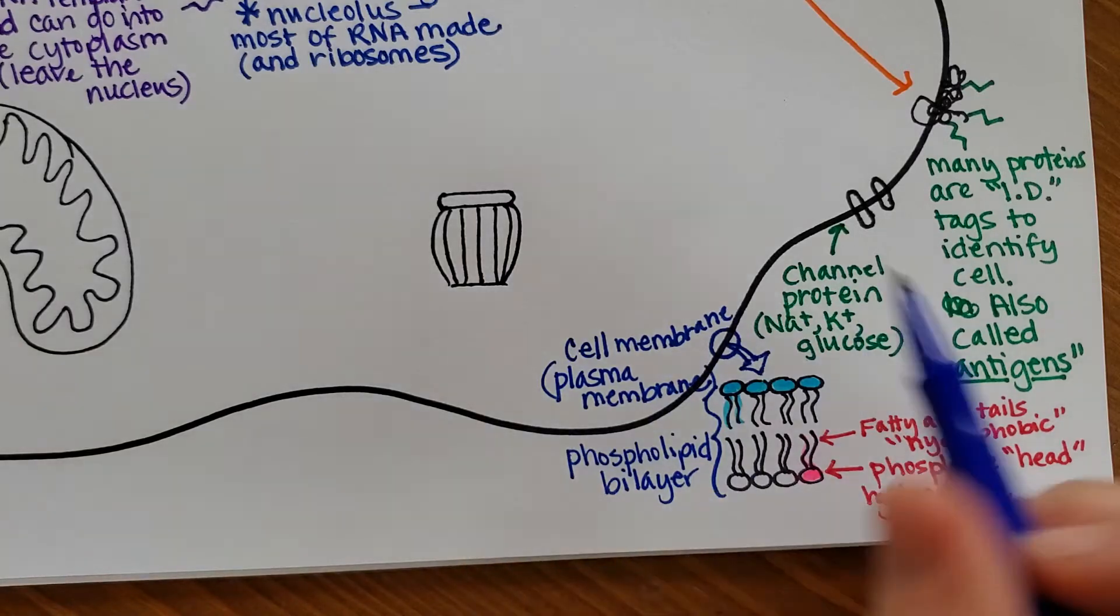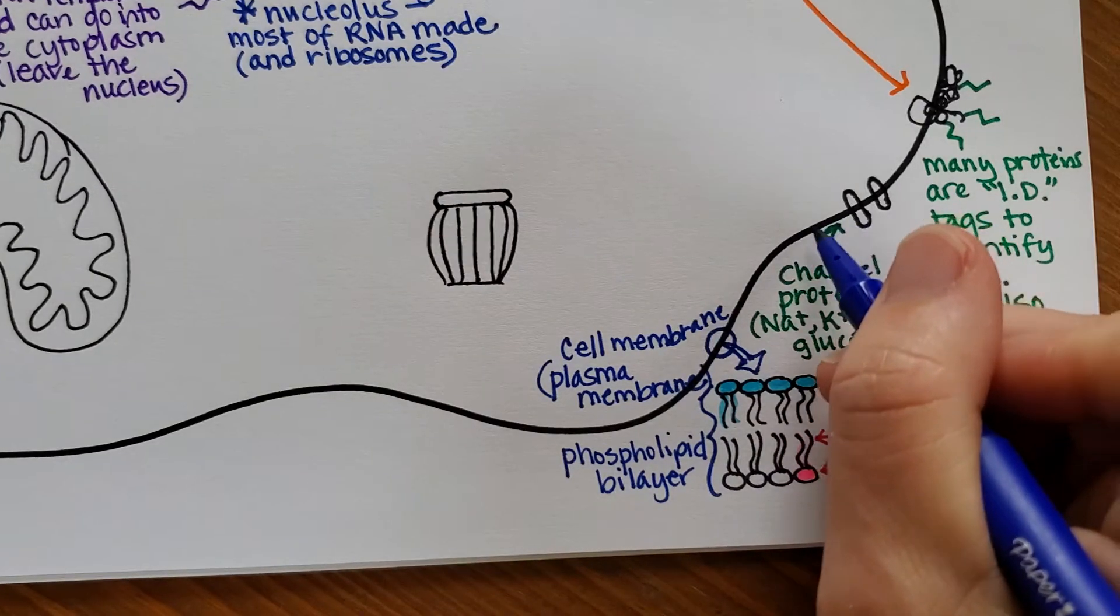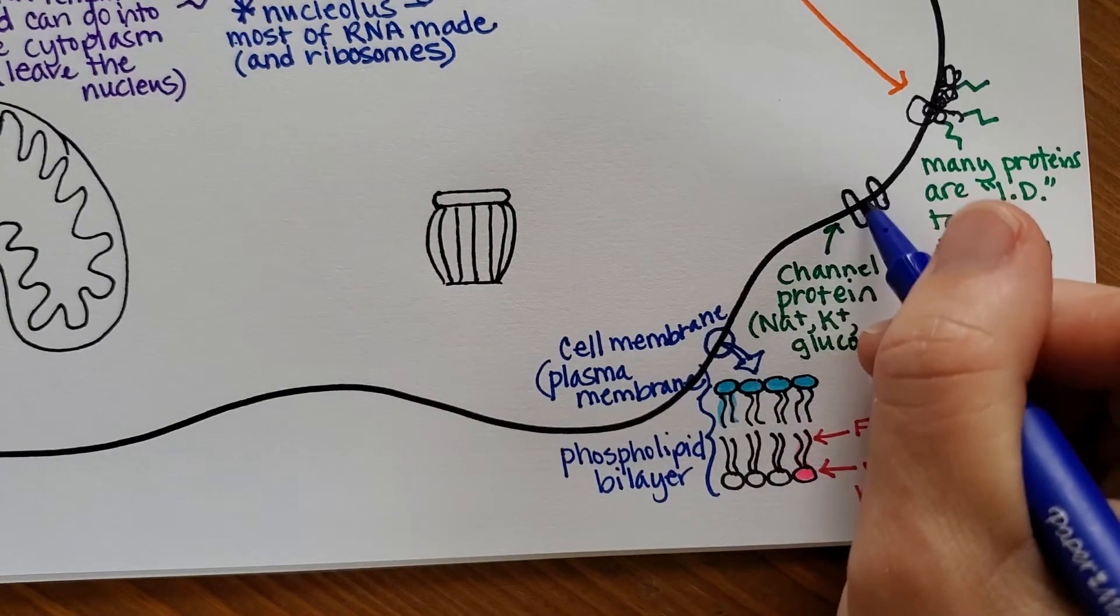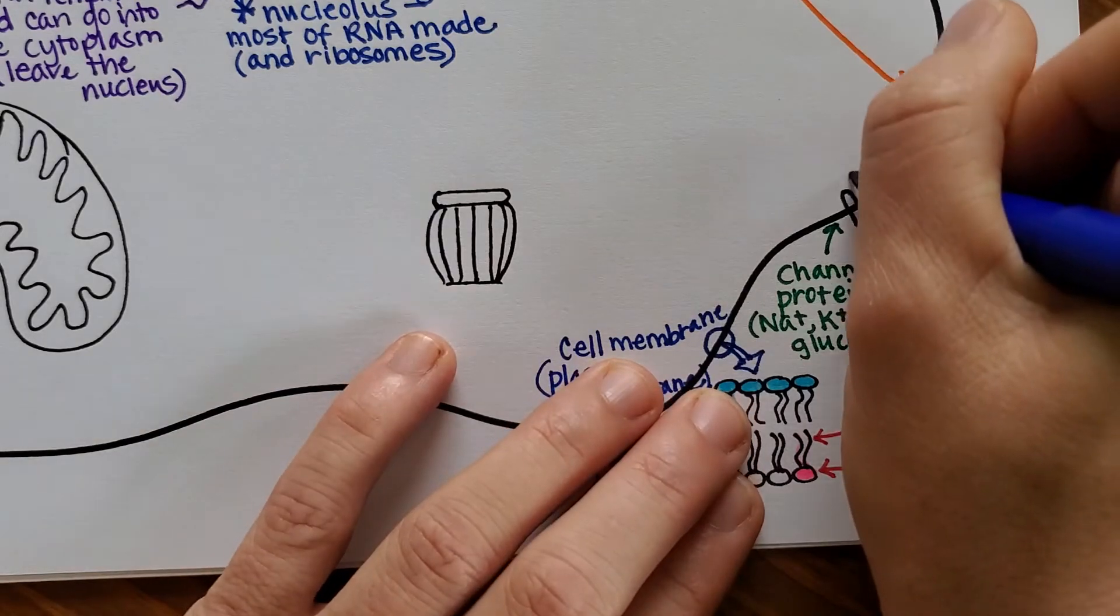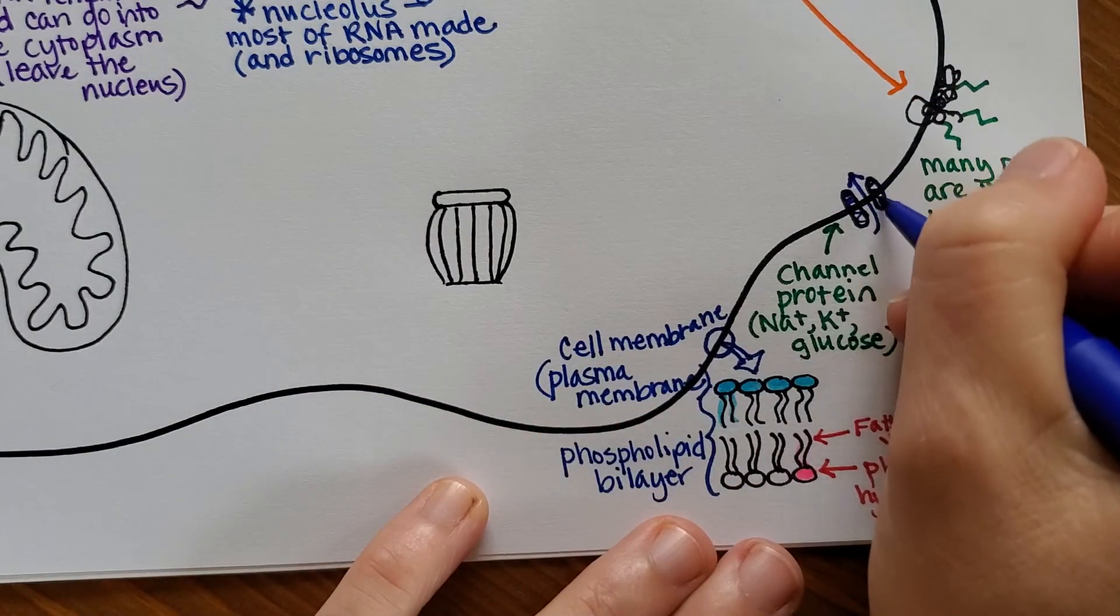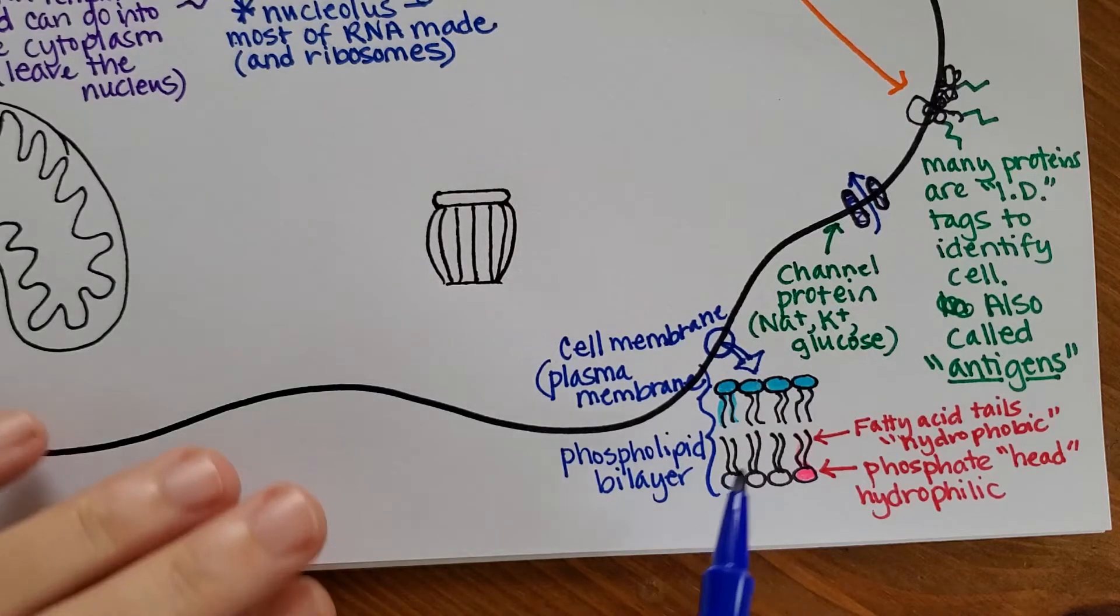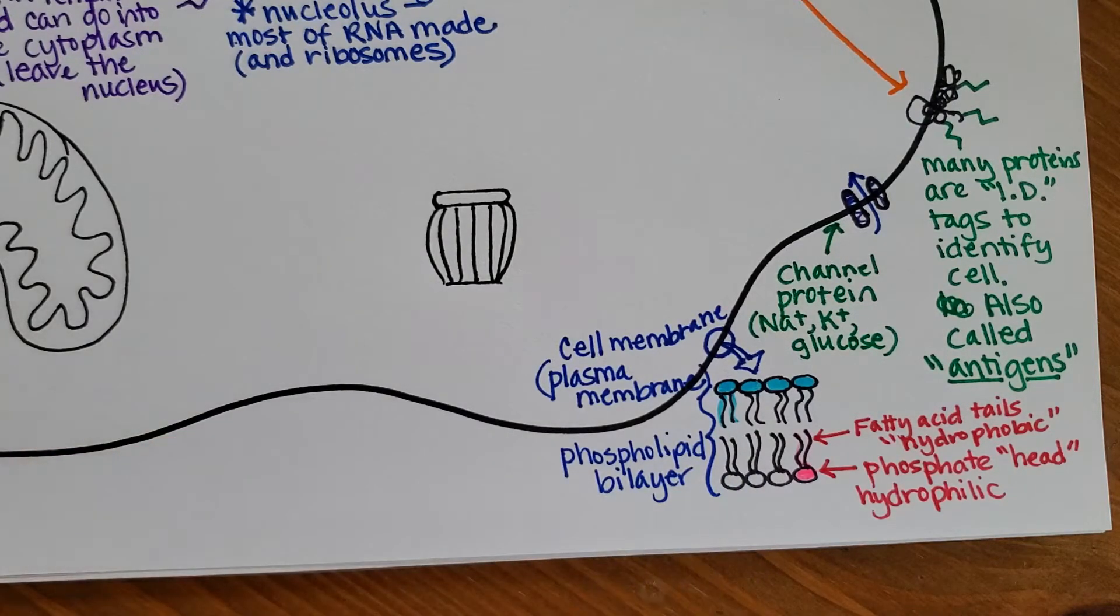And then if there was a membrane channel, it would just be interspersed between, like this would be all phospholipid bilayer, and then you'd actually have a gap to allow things to either go in or out right through the channel, and then more phospholipids here. So the cell membrane is what allows things to come in and out of the cell, and it also helps to maintain the right amounts of salts and potassium and things like this.